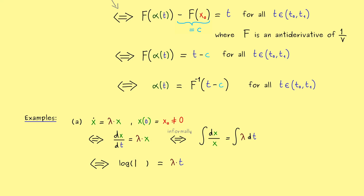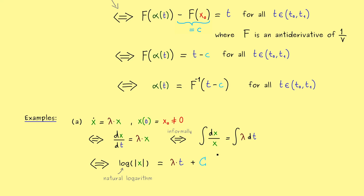The left hand side is a short notation for the antiderivative of 1 divided by v. The antiderivative of 1 over x is the natural logarithm of the absolute value of x. On the right hand side we have lambda times t. Different antiderivatives only differ by an additive constant, so we add a constant capital C to account for that. The idea is that we find the correct constant such that the initial value is satisfied — it does not matter whether we write minus c or plus c; we just have to find the correct constant at the end.